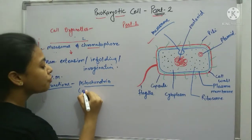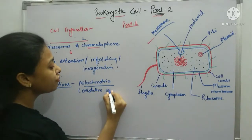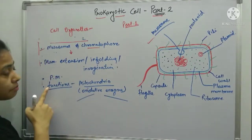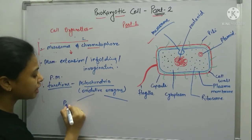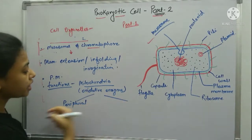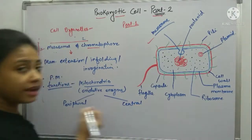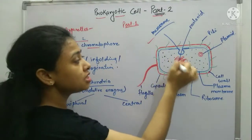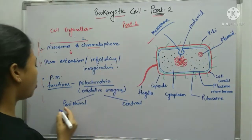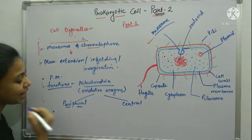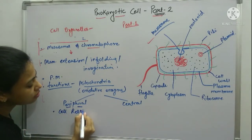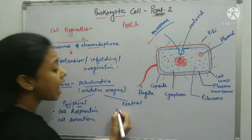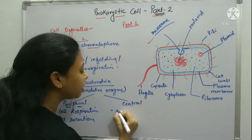It acts like mitochondria because it has various oxidative enzymes which play a role in various functions. On the basis of position, mesosomes are of two types: one is peripheral and another is central. Peripheral mesosomes are present nearby the plasma membrane, and central mesosomes are present nearby the nucleus or deep into the cytoplasm. Peripheral mesosomes play a role in cell respiration and also help in cell secretion, while central mesosomes play a role in DNA replication.